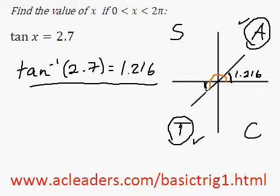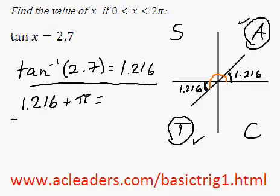This angle here is going to be equivalent to that angle there, so that's also 1.216. So I can actually add 1.216 to pi to get this angle, which is our second answer. I'm getting 4.3576 on the calculator, so I'm going to round it to three decimal places, 4.358.